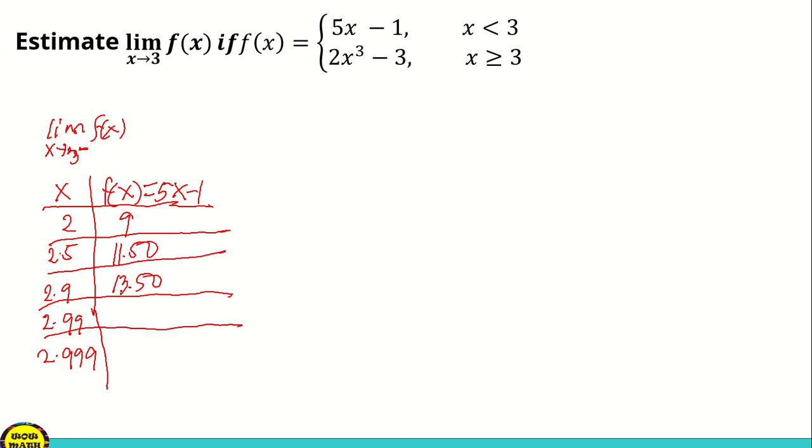If x is 2.99, the value of x is 13.95. And if that is 2.999, the value of x is 13.995. So as you can see, class, the limit of f of x as x approaches 3 from the left approaches yung sagot na lang sa 14.